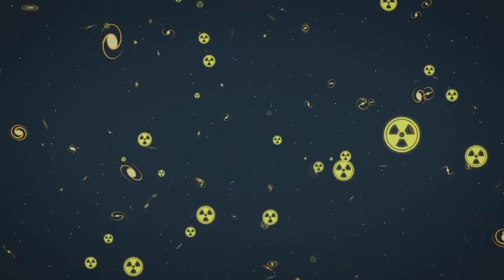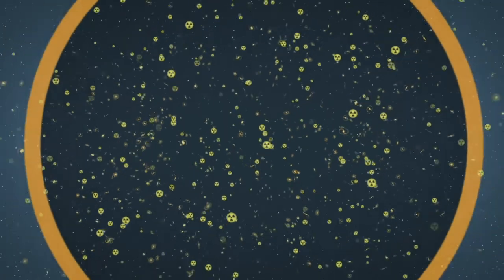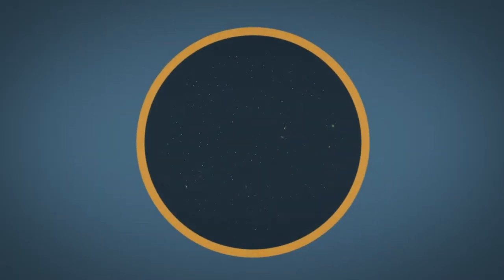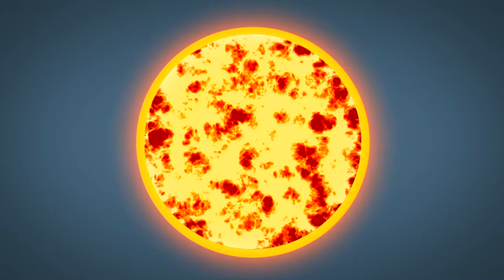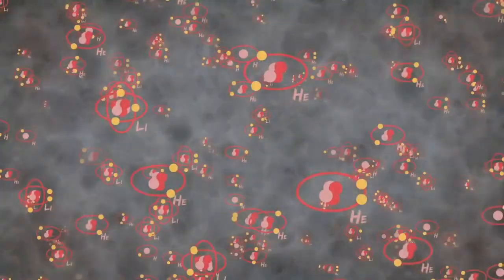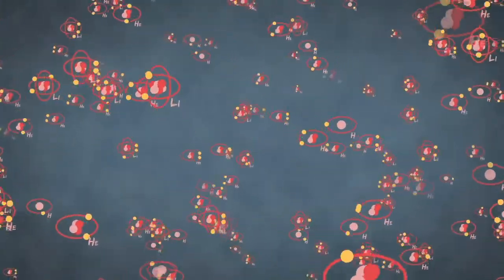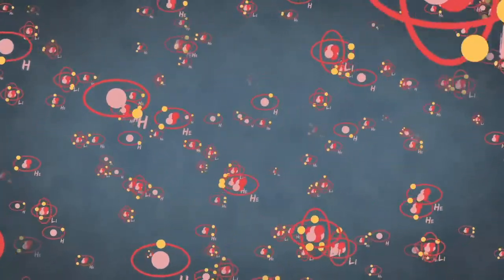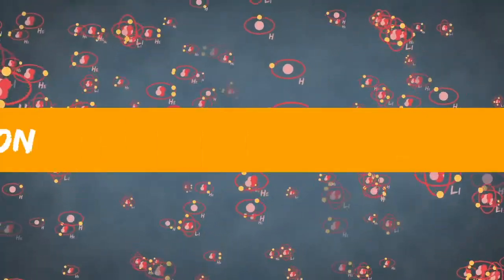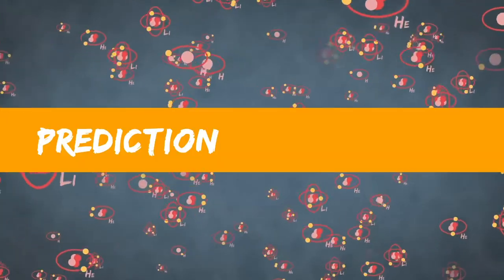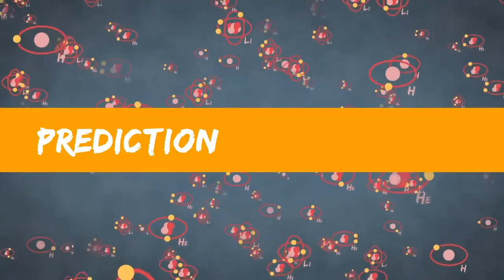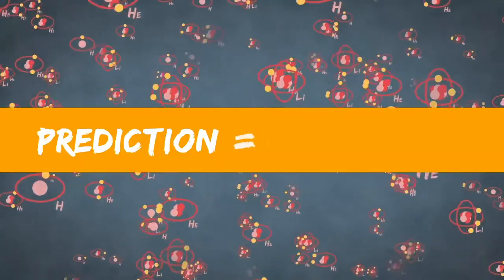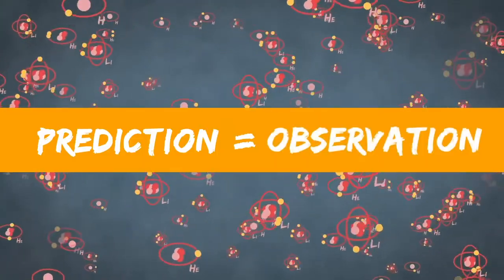And we can push the clock back even further. In the earliest moments of the universe, it was so hot, it was so dense, it was so intense that elements were being fused. Hydrogen and helium and lithium were being created. We were able to predict how much helium and hydrogen and lithium there ought to be in the universe. And we can compare that to observations. And guess what? We get the right answer.